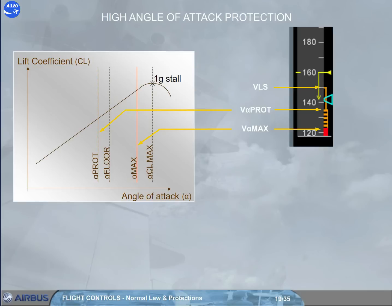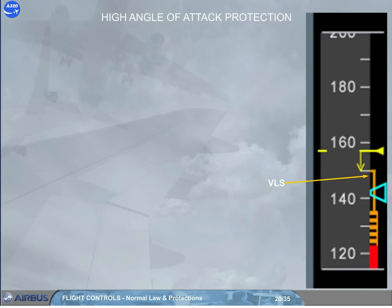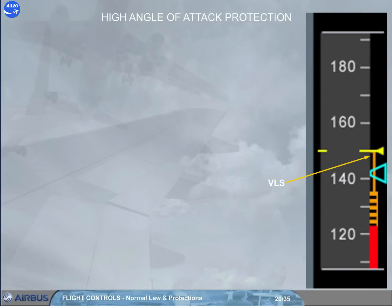Under normal law, when the angle of attack becomes greater than alpha-prot, the system switches elevator control from normal mode to a protection mode, in which the angle of attack is directly proportional to side stick deflection. As speed decreases, it stops at VLS — the lowest selectable speed — provided auto-thrust is engaged. Note: VLS is computed by the FAC and corresponds to 1.13 of VS during takeoff or after a touch-and-go.